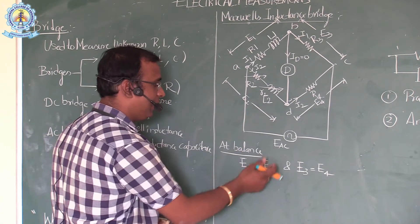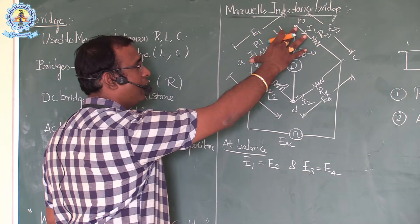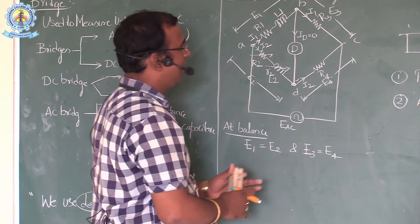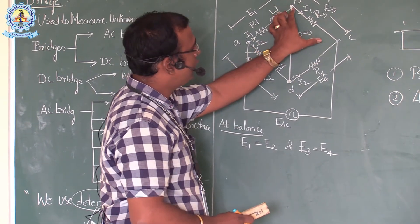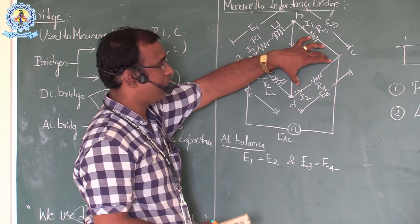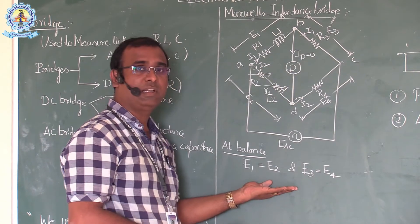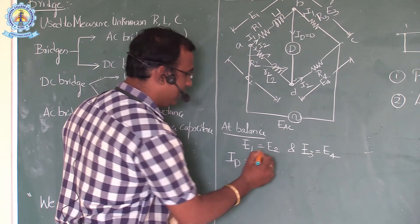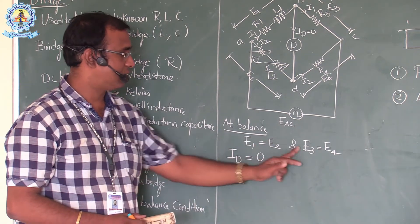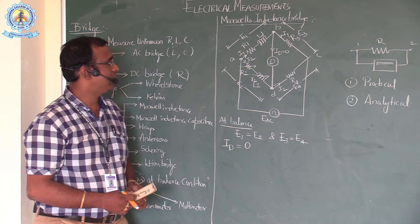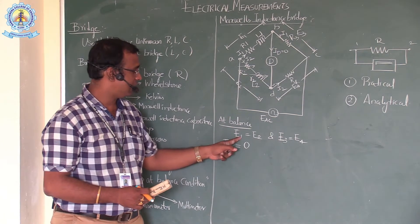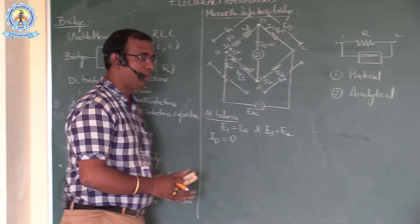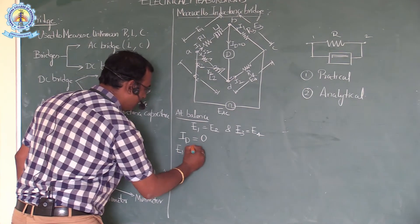At balance, the voltage drop across arm AB equals the voltage drop across arm AD, and the voltage drop across arm BC equals the voltage drop across arm CD. The detector current will be zero — only then are these two equations valid. So mathematically we write E1 = E2 and E3 = E4. For E1 = E2, we calculate the voltage drop across arm AB, where current I1 flows.